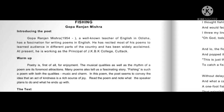Hamara jo ye poem hai — 'Fishing'. Is poem mein kavi kya karta hai: fishing rod lekar nadi jaata hai, do ghanta baithta hai, aur ye souch ke jaata hai ki kya hoga unke saath. Is particular poem mein ye sara jo part hai, isko ek diagrammatic way mein represent kiya hai — bahut hi sundar tariqe se explain kiya hai. Woh hum padheinge.